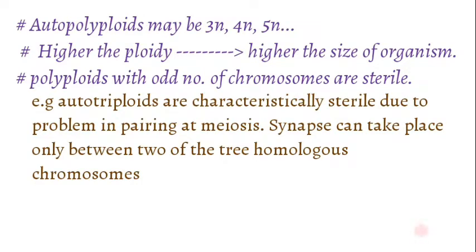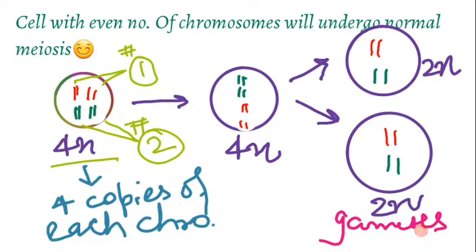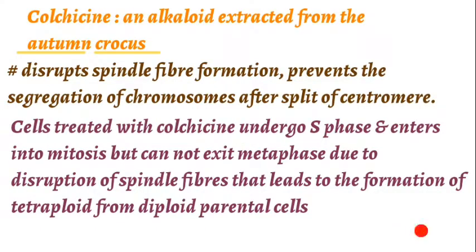Polyploids with an odd number of chromosome sets are basically sterile in nature — if organisms are triploid, pentaploid, or heptaploid, they will be sterile. The reason is improper pairing of chromosomes at meiosis: synapsis can take place only between two of the three homologous chromosomes, leading to improper gamete formation and sterility. Cells with an even number of chromosome sets undergo normal meiosis due to proper synapsis.